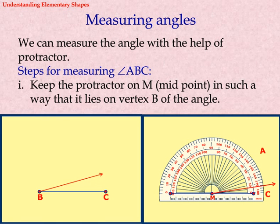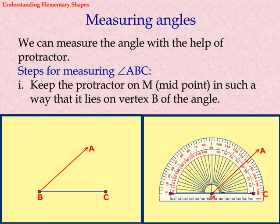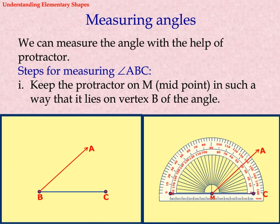Measuring angles. We can measure an angle with the help of a protractor. Steps for measuring angle ABC. Step 1: Keep the protractor on its midpoint in such a way that it lies on vertex B of the angle.